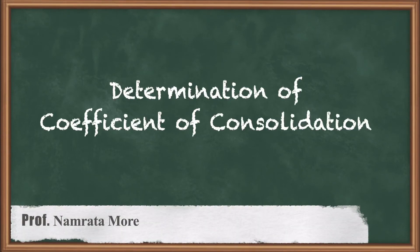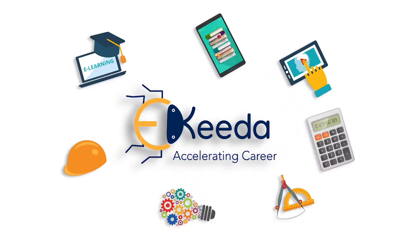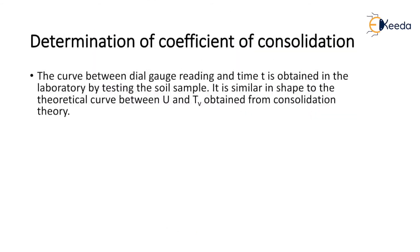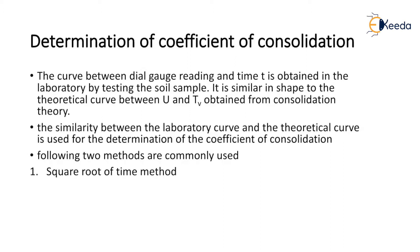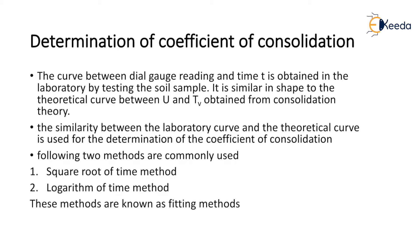In this video we are going to discuss determination of coefficient of consolidation. The curve between dial gauge reading and time t is obtained in the laboratory by testing the soil sample. It is similar in shape to the theoretical curve between U and Tv obtained from consolidation theory, where U is degree of consolidation and Tv is time factor. The similarity between the laboratory curve and theoretical curve is used for the determination of the coefficient of consolidation. Two methods are commonly used: the square root of time method and the logarithm of time method. These methods are known as fitting methods.